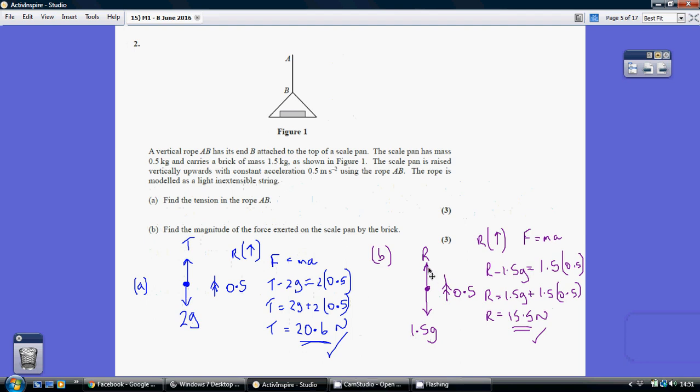So this is going to be the magnitude of the force exerted by the pan and the brick on each other. And again we're still accelerating upwards at 0.5.